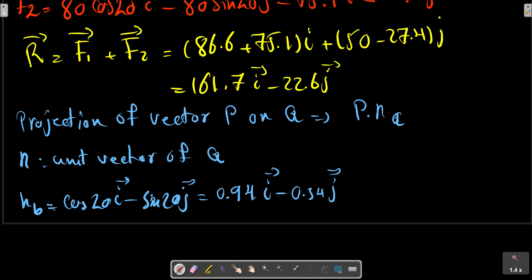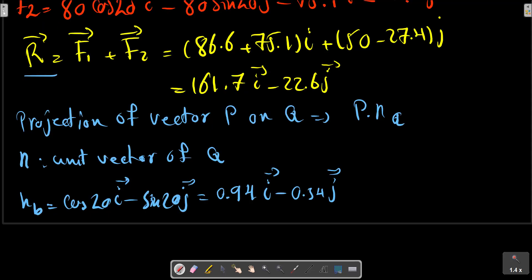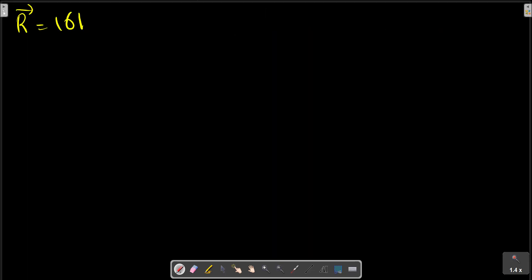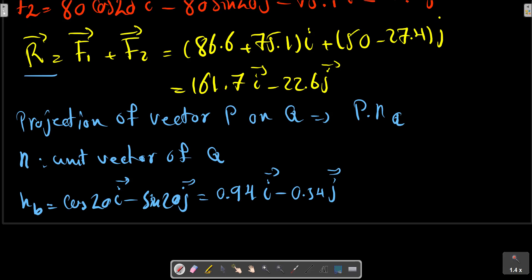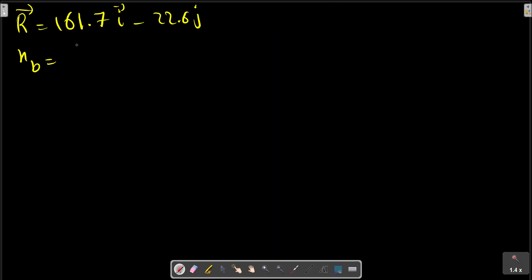Now we obtain n_b, and also we have R. n_b is 0.94 i minus 0.34 j.